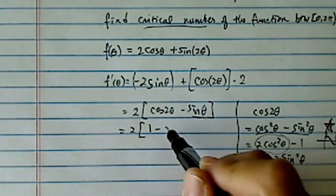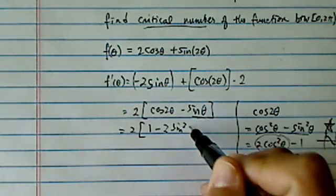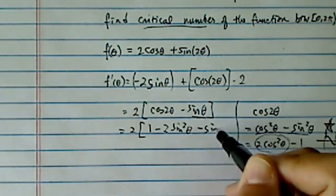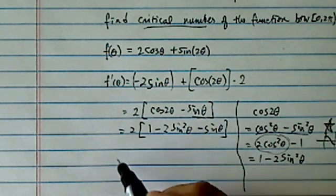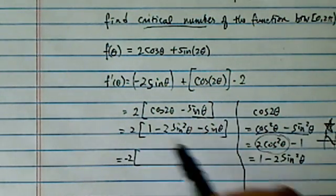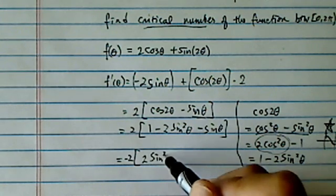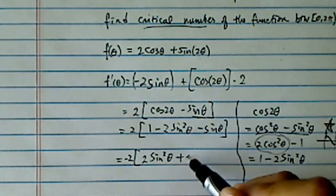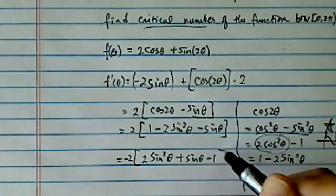So I have one minus twice sine squared theta. Then I have a minus sine theta here. Now, let's take the minus sign here out. It's kind of annoying to have a minus sign dangling around. So I have a plus sine theta minus one.